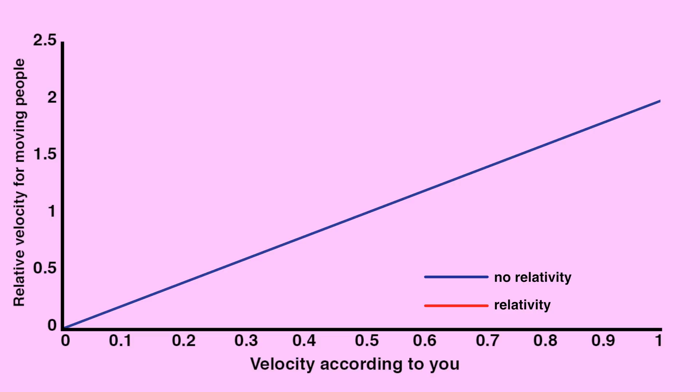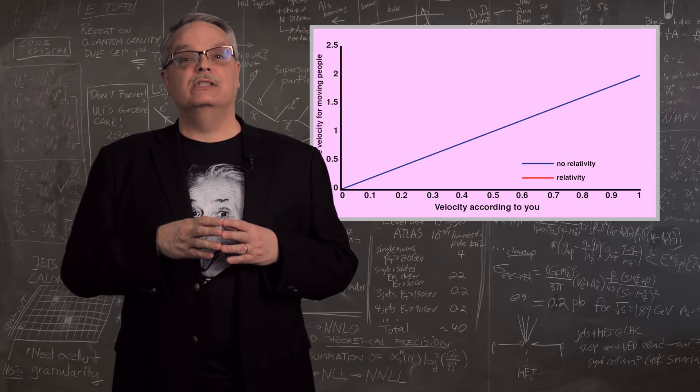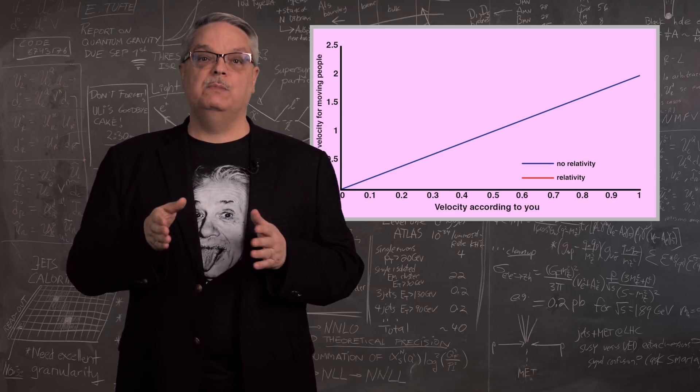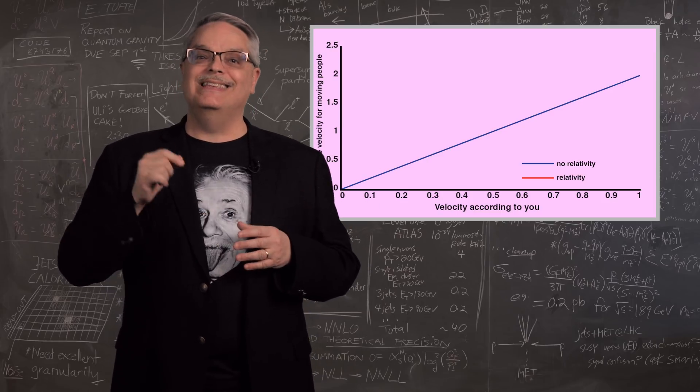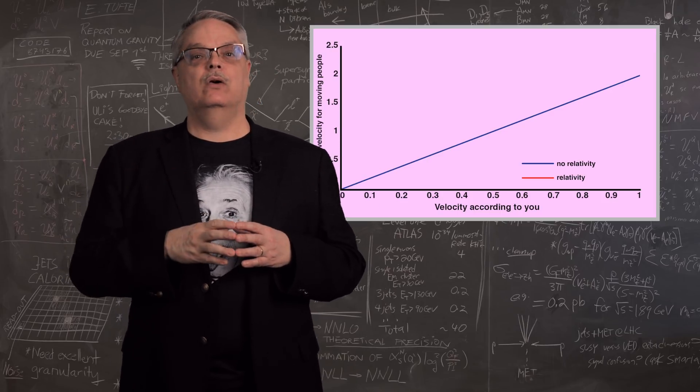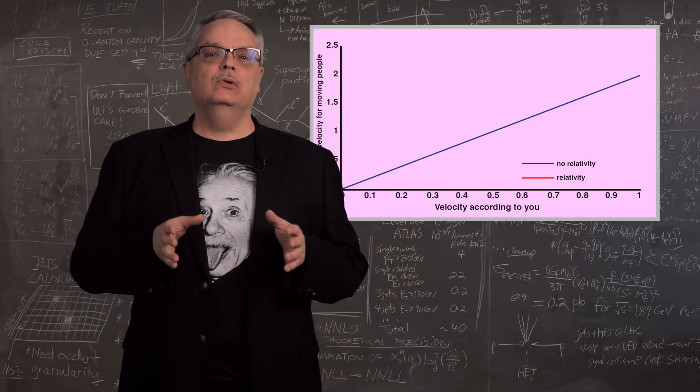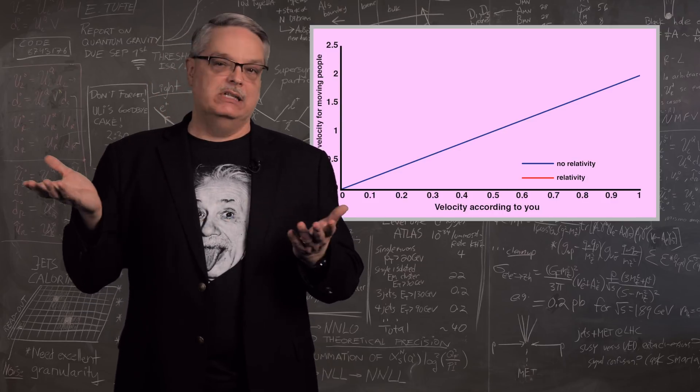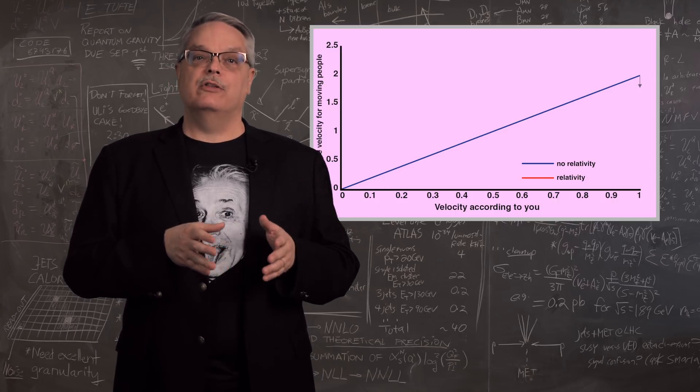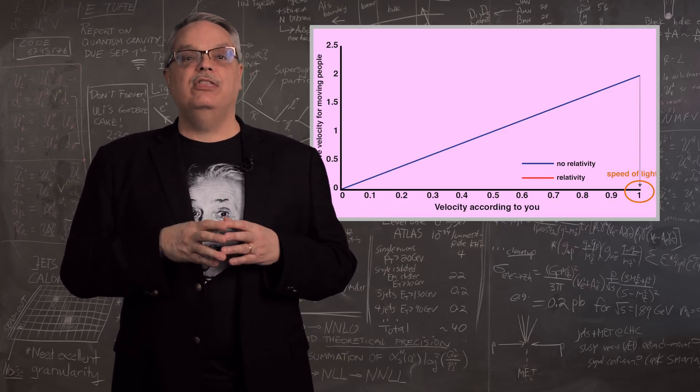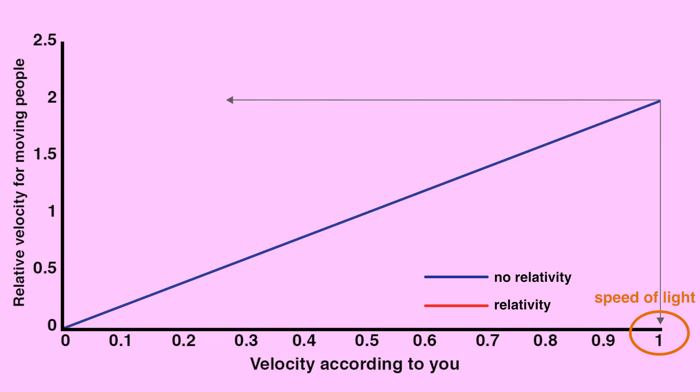This chart shows you the whole story. This is for two people heading towards one another according to you. On the bottom axis is their speed as a fraction of the speed of light according to you. On the vertical axis is the speed that they see the other guy going. The blue line is what they would see if relativity didn't exist. You see that if they were moving towards one another at near the speed of light, they'd think that the other person was moving at twice the speed of light.